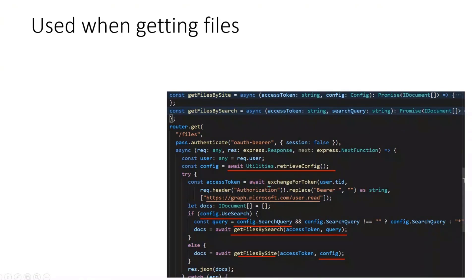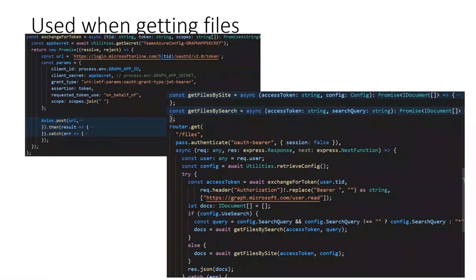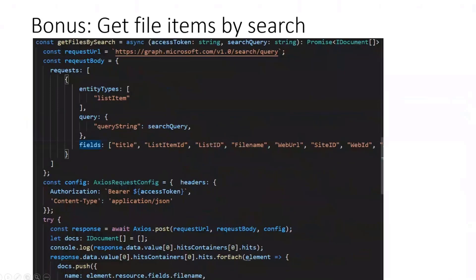Interestingly, the exchange for token function is where the on-behalf-of flow runs. I need my app secret to create my token — I receive it here and hand it over to post to the URL, get my access token on behalf, and with that access token I can run the methods: getFilesBySearch with the access token, or the getFilesBySite method.